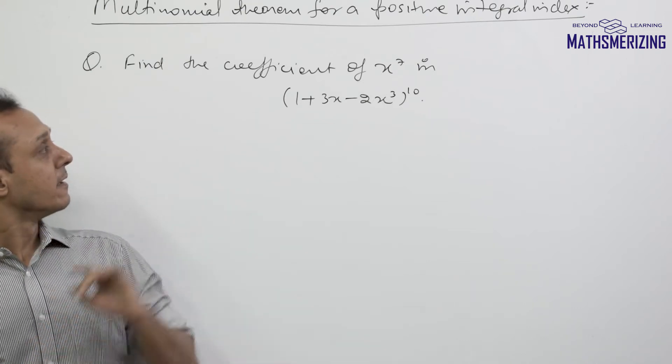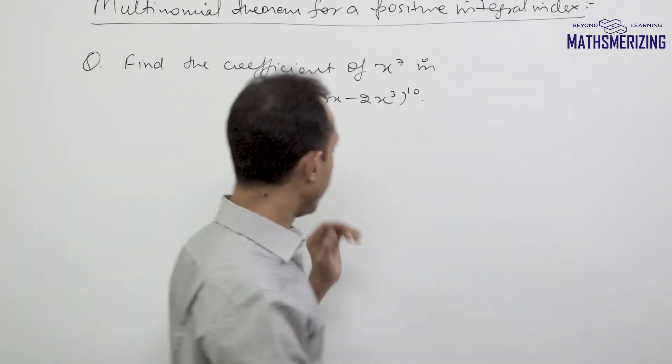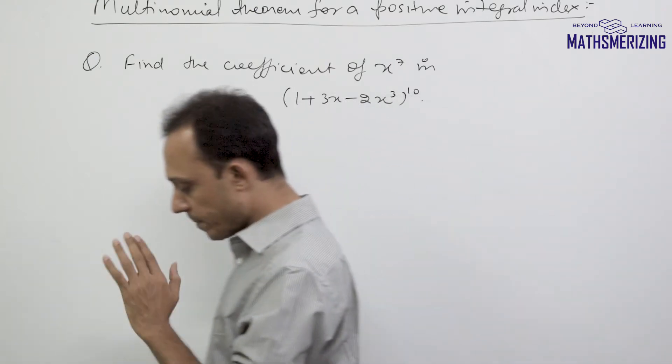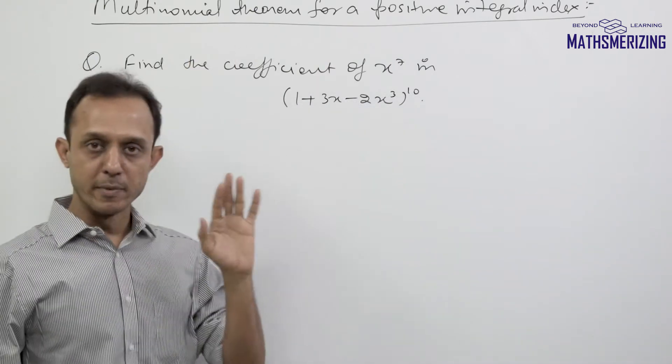Let us take up another example: find the coefficient of x to the power 7 in the expansion of (1 + 3x - 2x³)^10, and we are going to solve it using multinomial theorem.